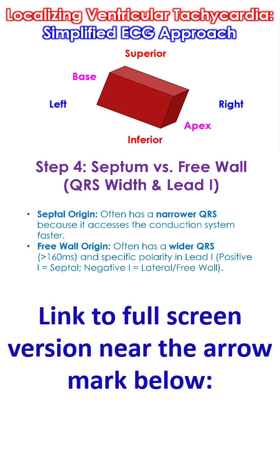Step 4 – Septum vs Free Wall, based on QRS width and lead 1. A septal origin often has a narrower QRS because it accesses the conduction system faster. A free wall origin often has a wider QRS — more than 160 ms — and specific polarity in lead 1. Positive in lead 1 indicates a likely septal origin; negative in lead 1 indicates a likely lateral or free wall origin.